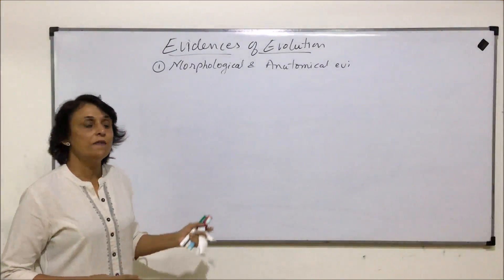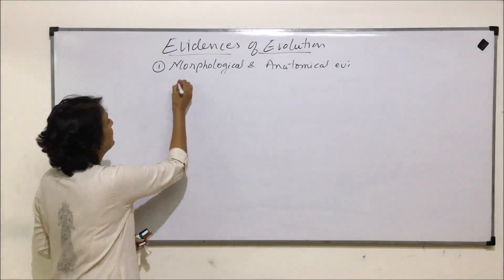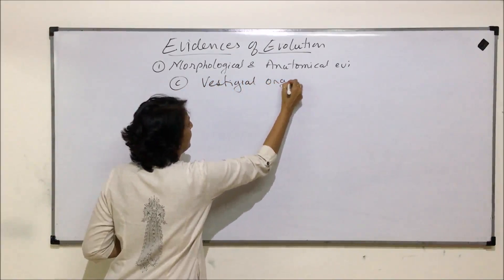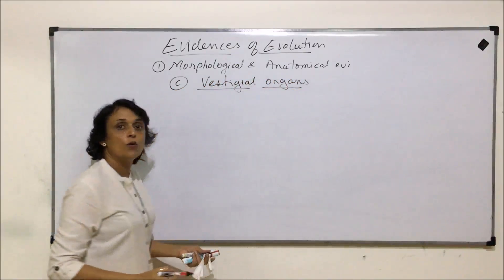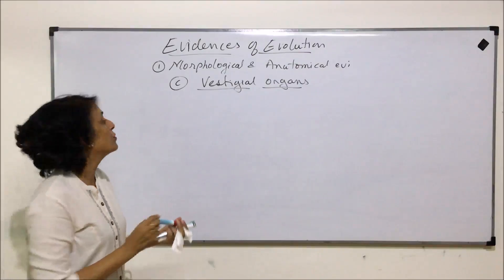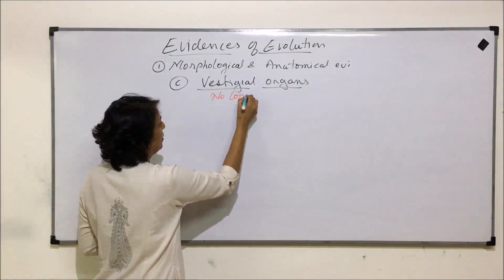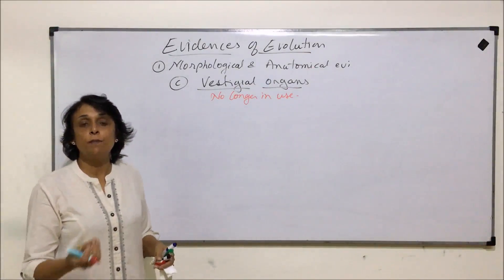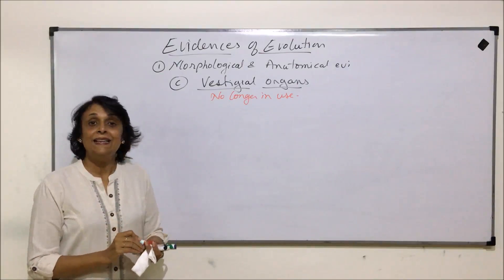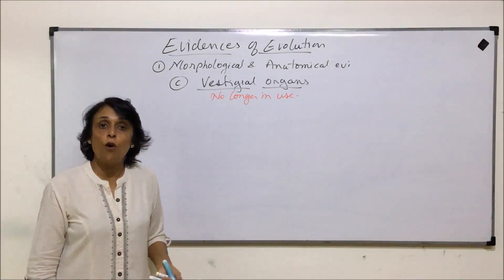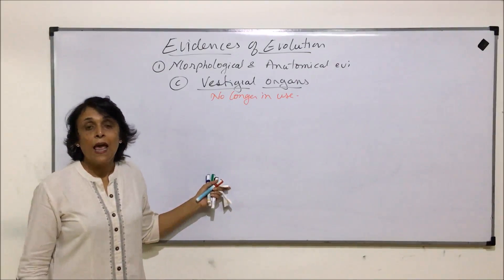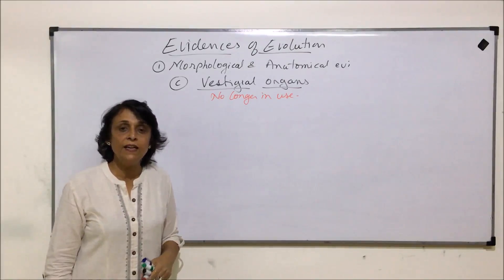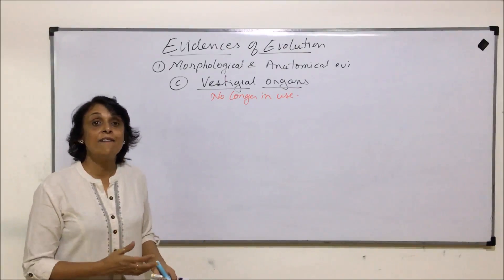The next category of evidence under morphological and anatomical is vestigial organs. Vestigial organs are those which are no longer in use, but if they are present in the body of an organism, that indicates they were functional earlier or functional in the ancestors. If ancestors had that organ functional, it helps us understand how our ancestors must have been.